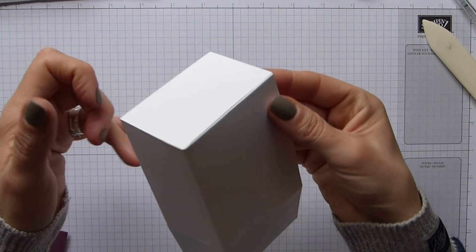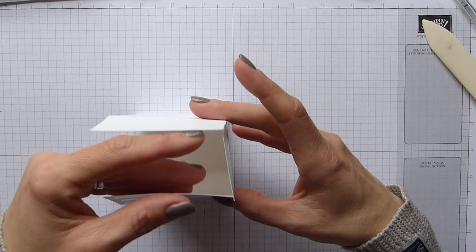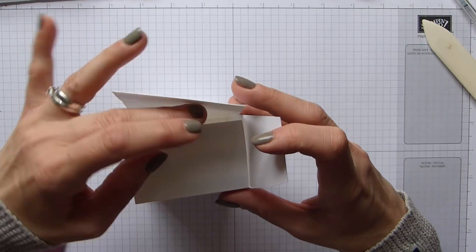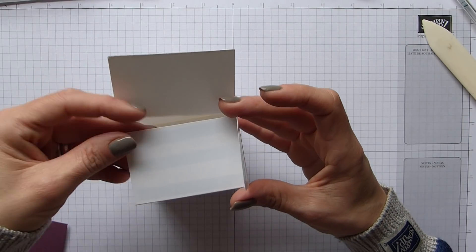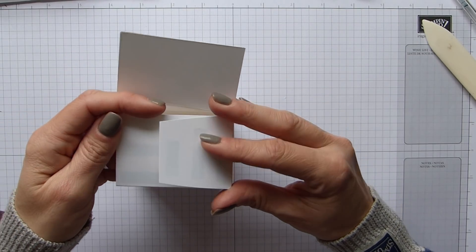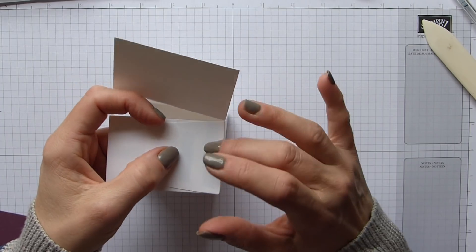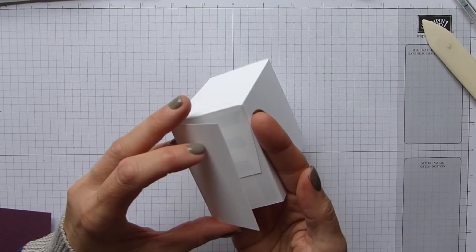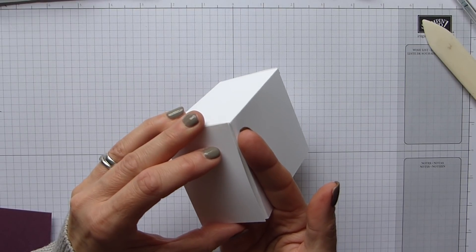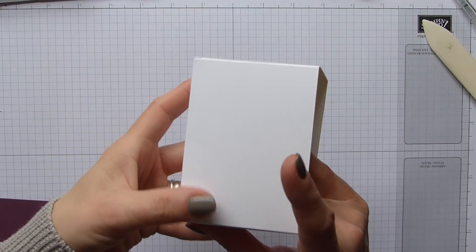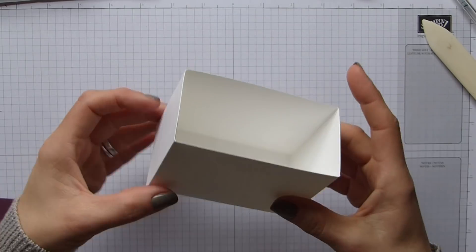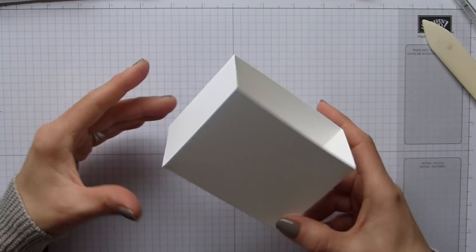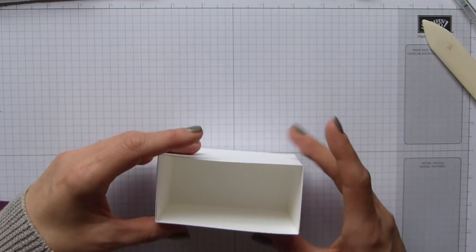So you have that box and then we're going to do exactly the same this side. So my adhesive side in first, tuck it into the fold, and then my tab. And then exactly the same this side, make sure it all lines up nicely. And there is my base and that's the base of my box all done and ready to fill with goodies.